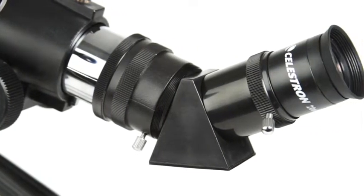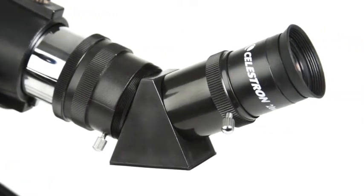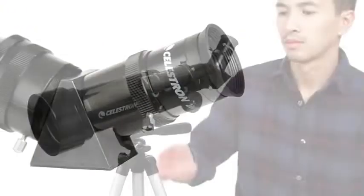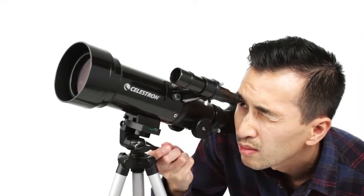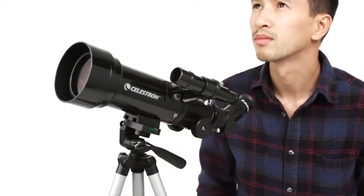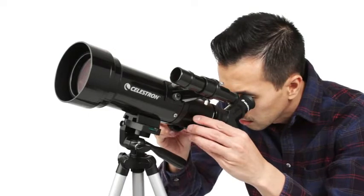So you can also use TravelScope for daytime observations of wildlife, birds, and more. To view objects, first center them in the 2x20 optical finder scope. Then, get a closer look using either the low or high-power eyepiece.